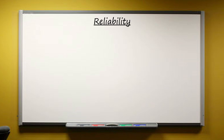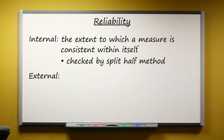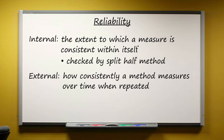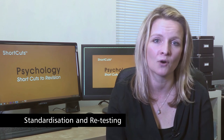A key distinction you need to make is between internal and external reliability. Internal reliability refers to the extent to which a measure is consistent within itself, and this can be checked by the split-half method, where the results of half the items are correlated with the results of the other half. External reliability refers to how consistently a method measures over time when repeated, and this can be assessed using the test-retest method, correlating results from participants at one time with results obtained at another time. To attain reliability, data collection has to be standardised, with the opportunity to retest under the same conditions, as with a questionnaire or laboratory experiment.